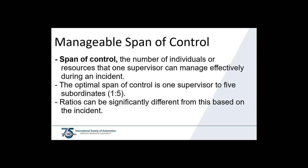Maintaining a manageable span of control is particularly important at incidents where safety and accountability are a top priority. Typically, span of control is from 3 to 7 subordinates, with the optimum being 5. More than 7 creates a new branch; less than 3 might get absorbed by existing branches. This is a guideline and incident personnel should use their best judgment.